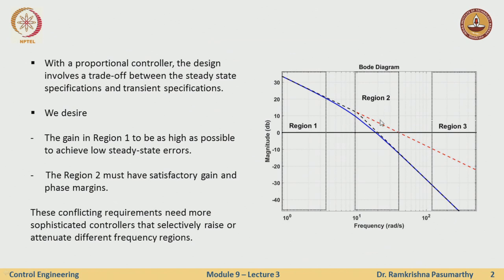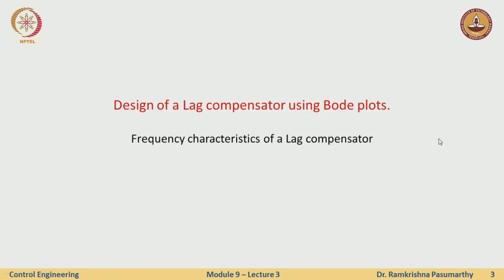Region 2 must have satisfactory gain and phase margins. If there are conflicting requirements, we need sophisticated controllers. The higher frequency region takes care of attenuation of unwanted noise signals, which usually occur at higher frequencies.